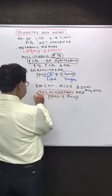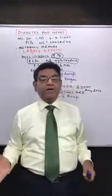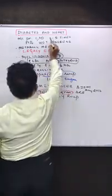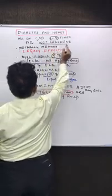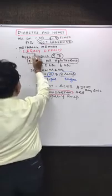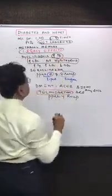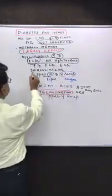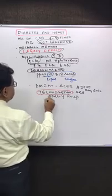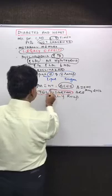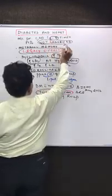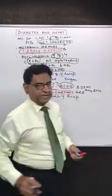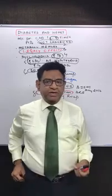To summarize the whole lecture on cardiovascular involvement in diabetes, the eight key points are: first, CAD is three to five times more common; second, wet gangrene; third, legacy effect; fourth, increased triglycerides; fifth, increased LDL in nephrotic syndrome and hypothyroidism; sixth, saroglitazar; seventh, ACEI; and eighth, telmisartan.